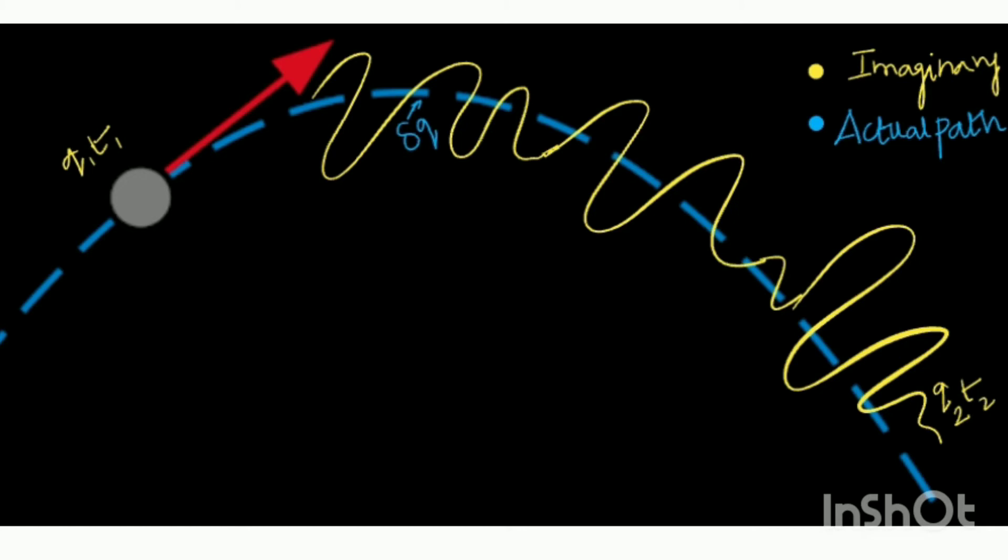The yellow zigzag path is an imaginary path of the ball. Just assume, instead of taking the actual path, if the ball takes the imaginary path, what happens? Don't worry - it is impossible for a ball to take such trajectories. Let us see the reason behind it.